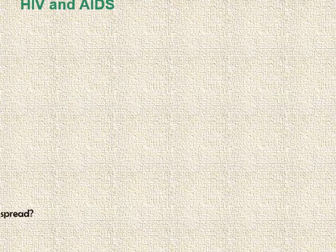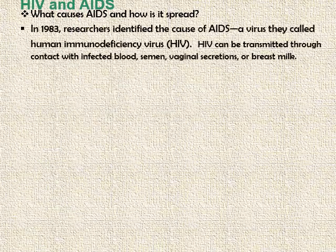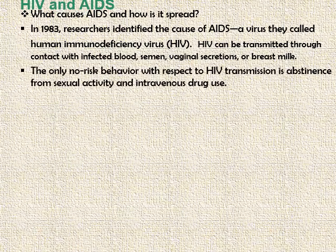HIV and AIDS. What causes AIDS and how is it spread? In 1983, researchers identified the cause of AIDS — a virus called HIV, which is an abbreviation for Human Immunodeficiency Virus. HIV can be transmitted through contact with infected blood, semen, vaginal secretions, or breast milk.